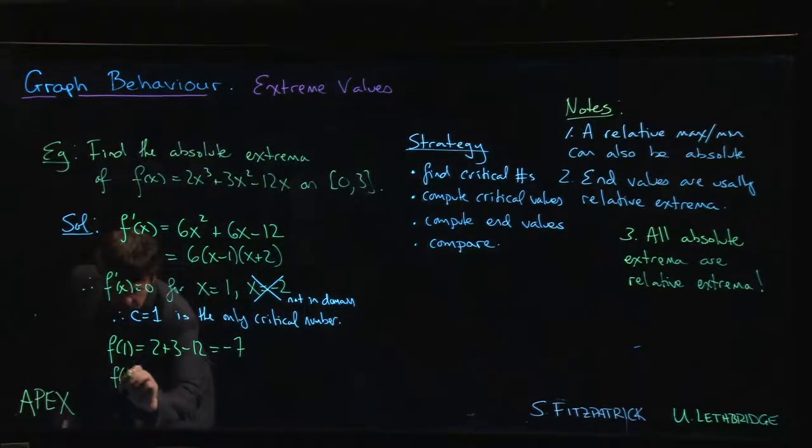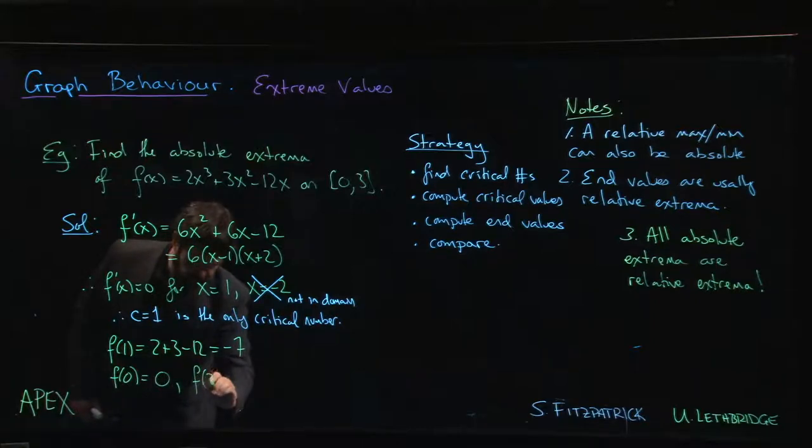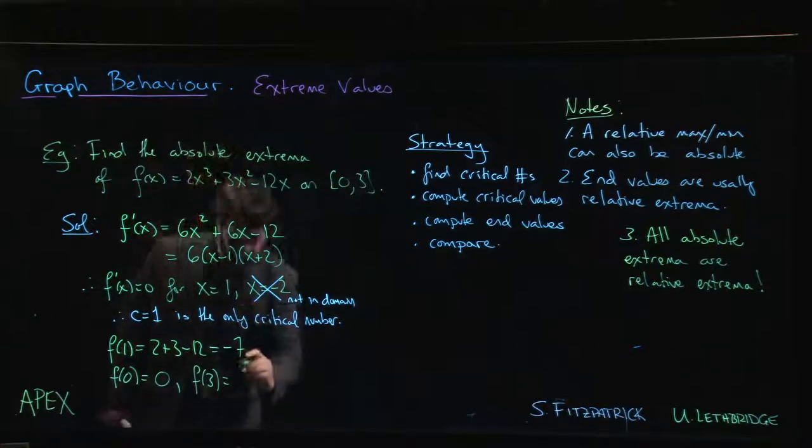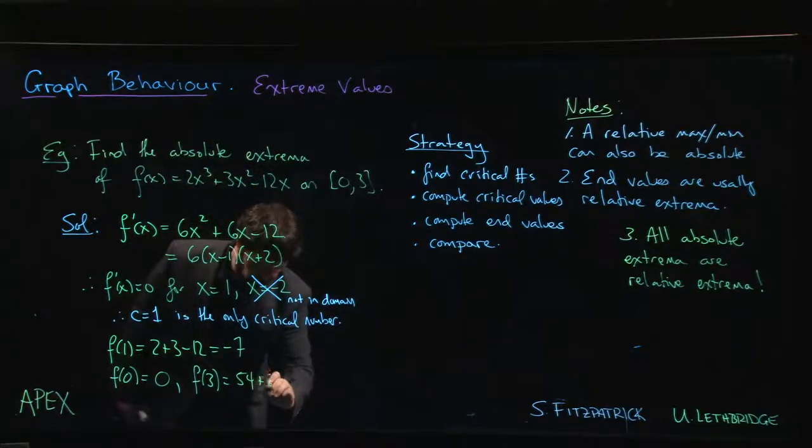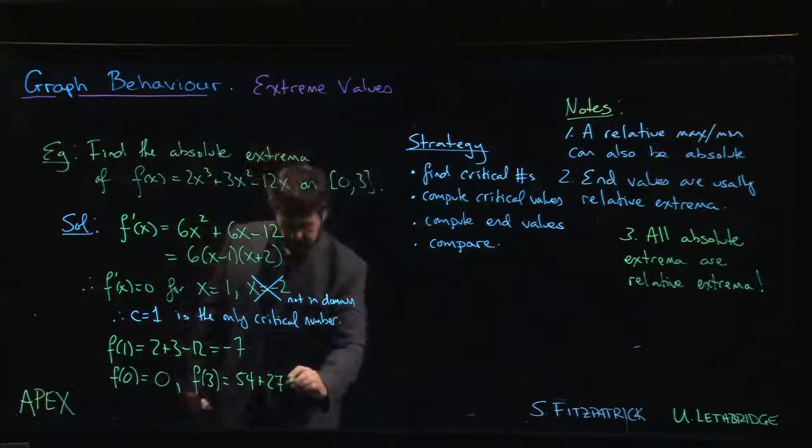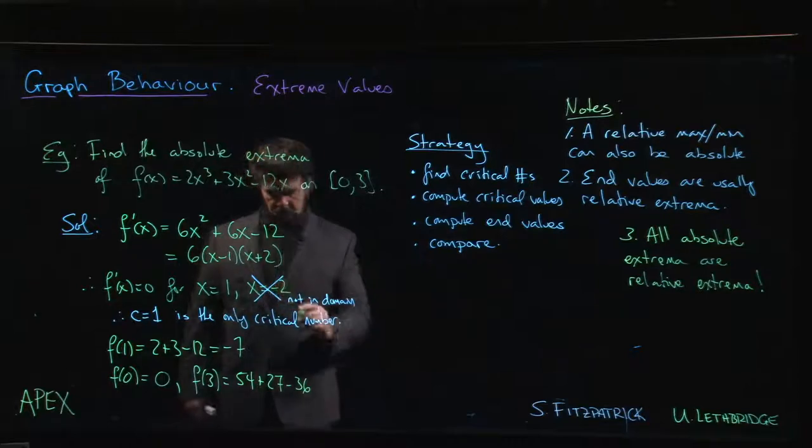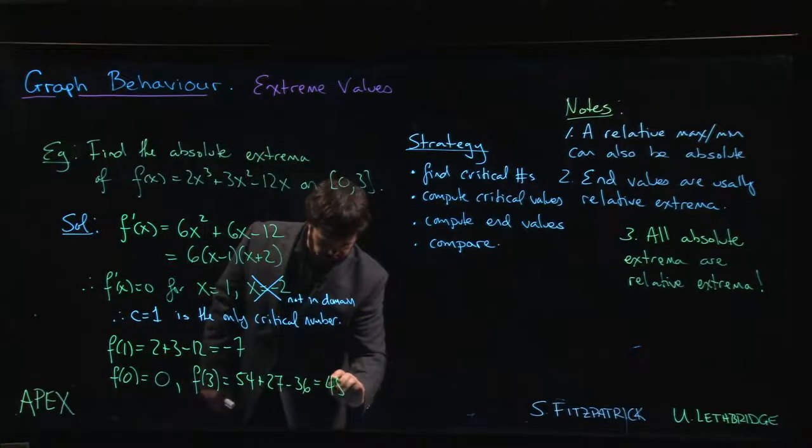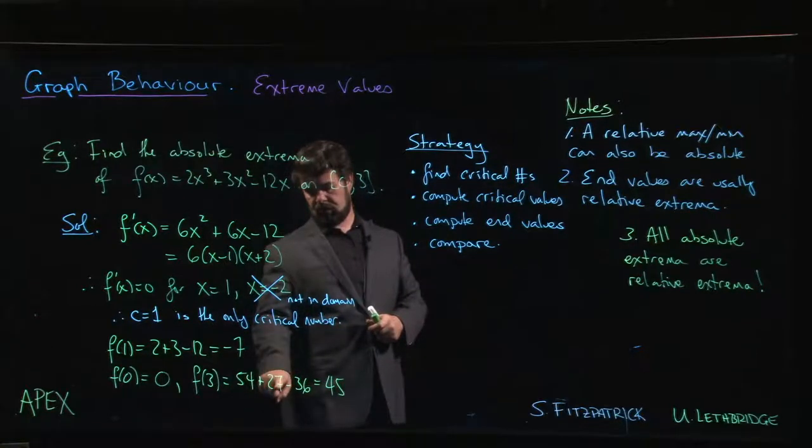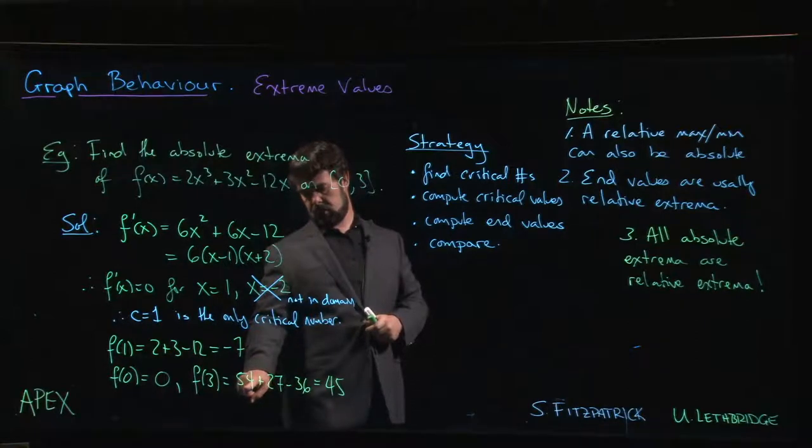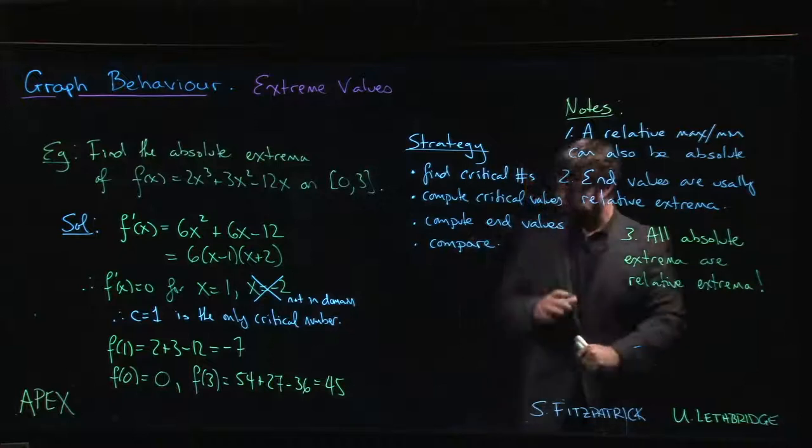Next: end values. We need f(0) and f(3). f(0), we can tell right away, is just 0. f(3): 3³ is 27 times 2 is 54, then we're adding 3 times 3² so 27, minus 12 times 3 so minus 36. If we add all those up—double check my arithmetic—that comes out to 45. These are multiples of 9: 6 times 9 plus 3 times 9 minus 4 times 9. So 6 + 3 - 4 = 5 times 9 = 45.